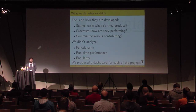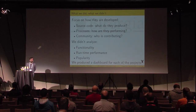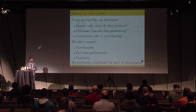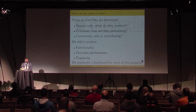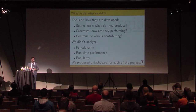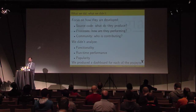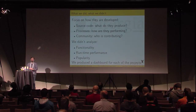Let's go to the study. First, what we tried to do — and what we didn't. We are focusing on how these systems are developed: looking at the source code, which is basically what they produce; looking at the processes, how they are performing in terms of activity and metrics; and looking at the community. The metrics for source code are going to be very simple — size, languages, things like that — just to put into context the other two parts, which are from my point of view the really important ones.